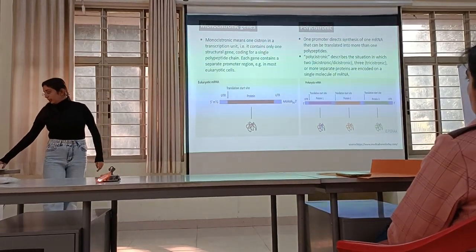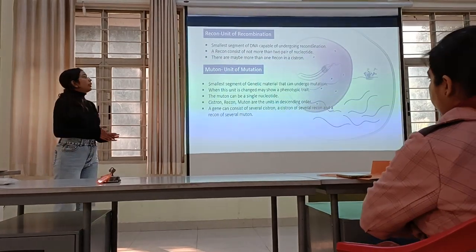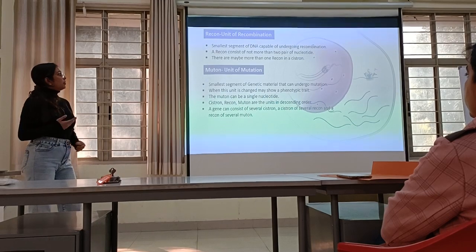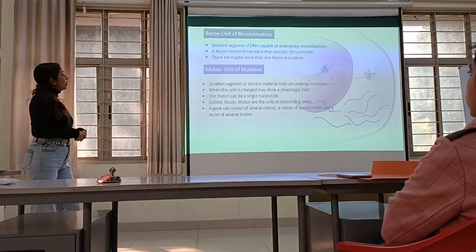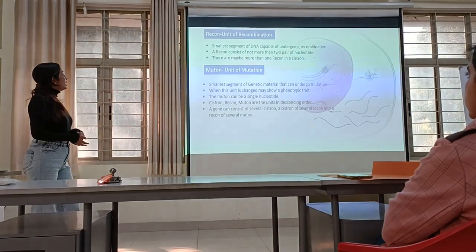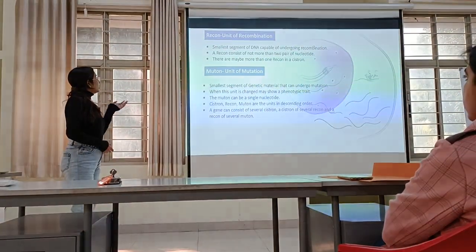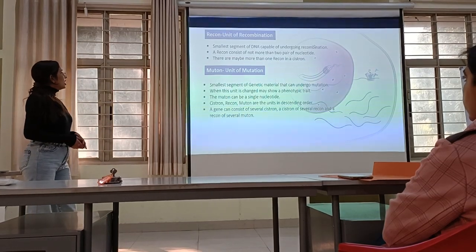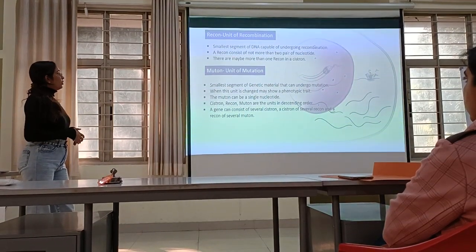Further, recon is the unit of recombination — the smallest segment of DNA capable of undergoing recombination. A recon consists of one or more than two base pairs of nucleotides. There may be more than one recon in a cistron. And muton is the unit of mutation — the smallest segment of genetic material that can undergo mutation.